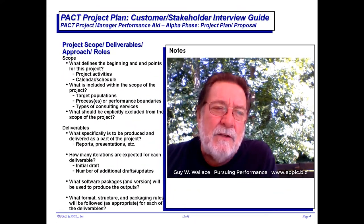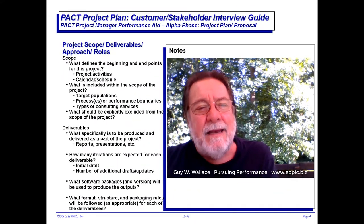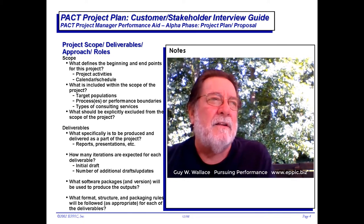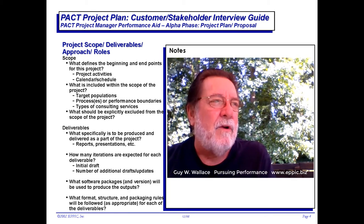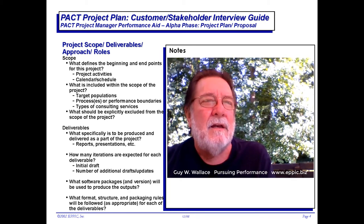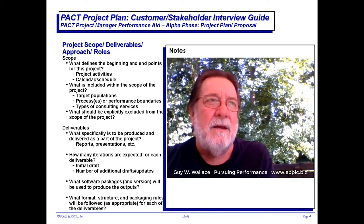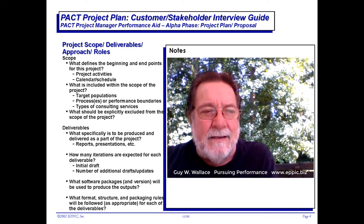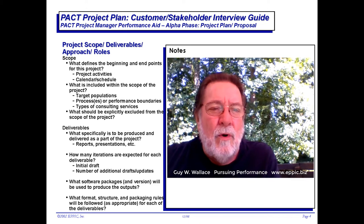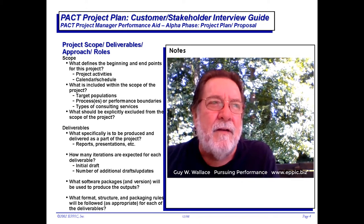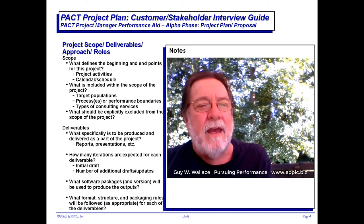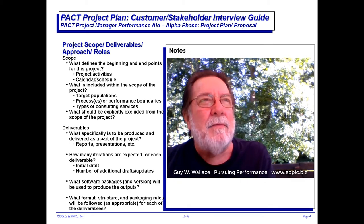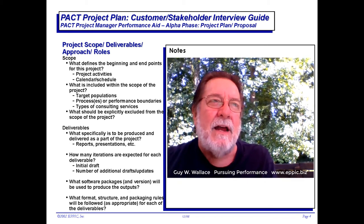Page four: we want to understand what defines the beginning and end points for this project. Are we going to create something and hand it off, or are we going to be involved in continual delivery? Or will this be put in the cloud for people to access whenever they want — or is that controlled access? What's included in scope? We're figuring out what's inside the box of the effort as they see it, what might be borderline, and what's definitely outside the box.